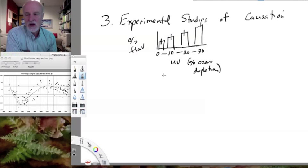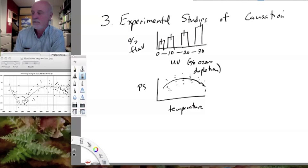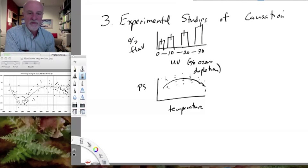So we might vary UV, or we might vary temperature. And this is often, temperature often have optima for different kinds of curves. For example, photosynthetic rate, there tends to be an optimum temperature for photosynthesis. And so we could quantify that by varying temperature systematically and looking at the response of photosynthesis.